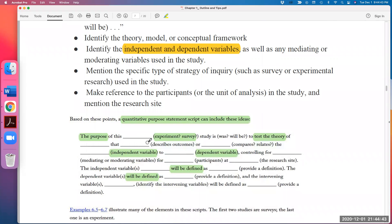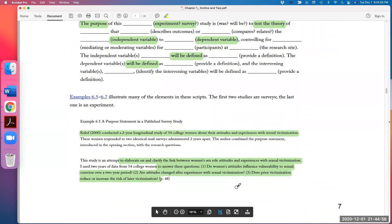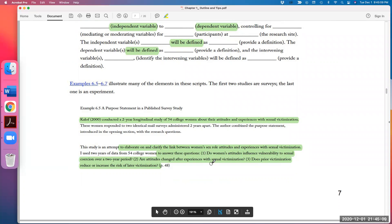The purpose of this experimental research study or a survey research is to examine so-and-so variables. So I have highlighted here dependent, independent variables and how you want to control them, mediate them. And here is a good example. The purpose of this study was to elaborate on and so-and-so here. Look. And it has two research questions or three research questions followed by the purpose of this study.